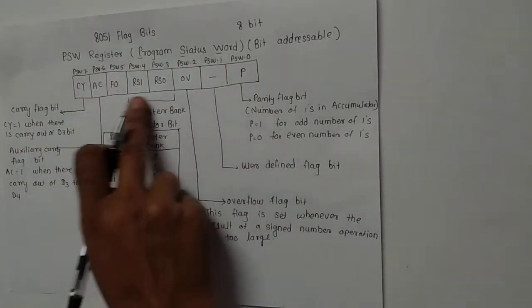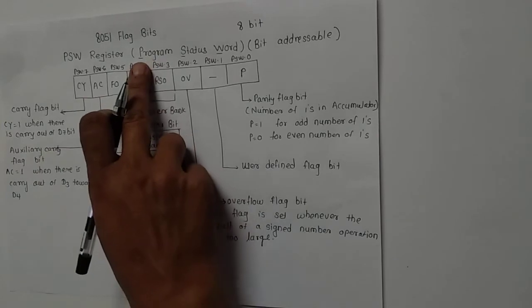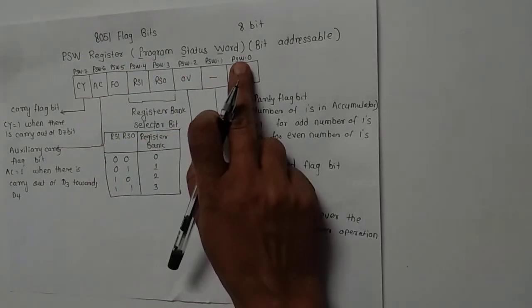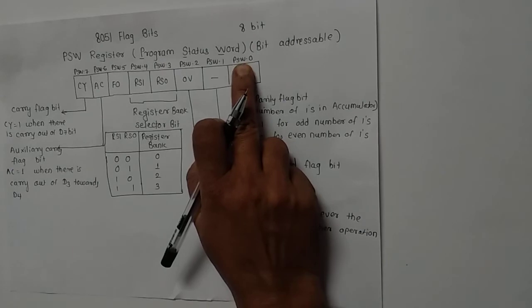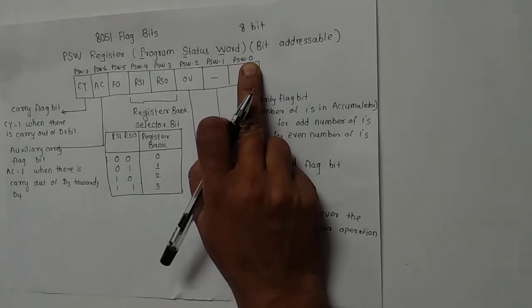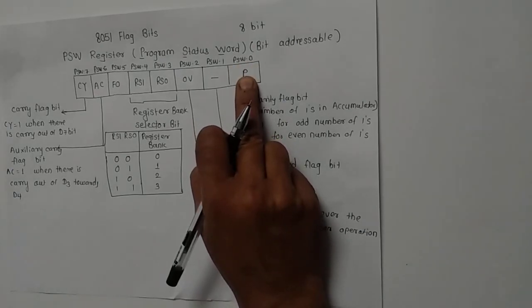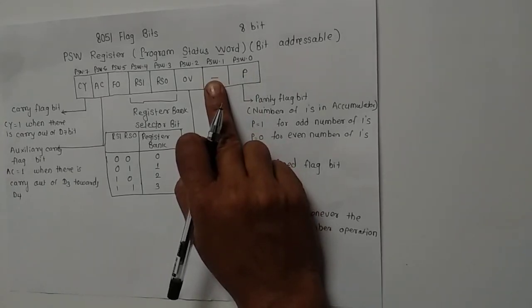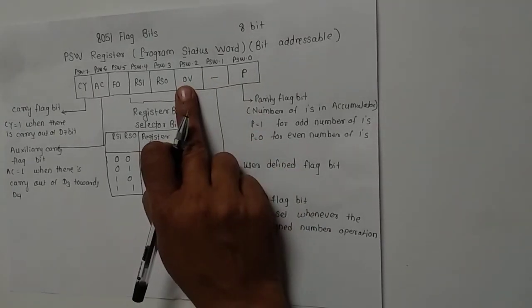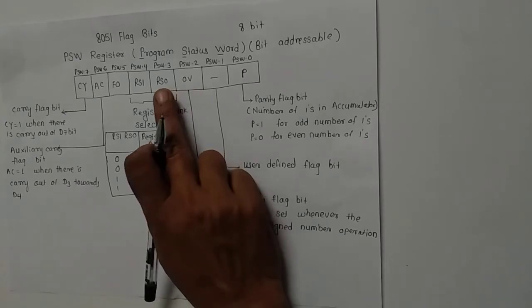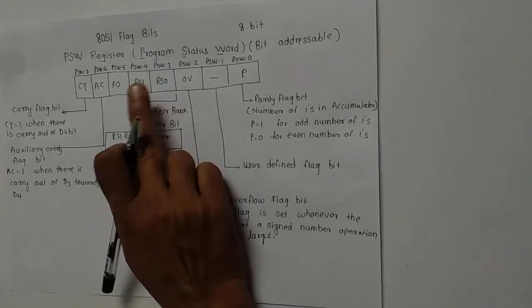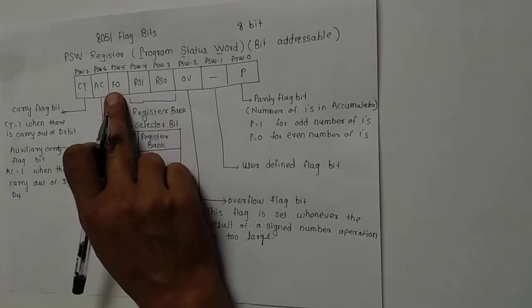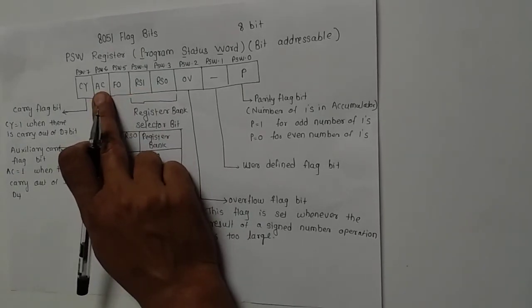This is called the bit structure of the PSW register. This is PSW.0, meaning the 0th bit of this register. This is the first bit of the register, this is the second bit of the register, then we have the 3rd, 4th, 5th bit, 6th bit, and 7th bit.